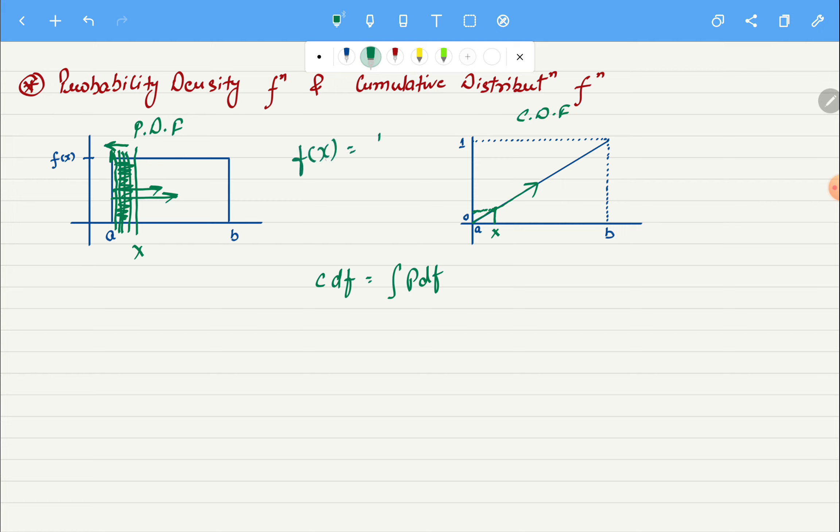So in case of uniformly distributed variable we have f of x as 1 by b minus a. Now if I want to get our CDF from it, so this is nothing but PDF. So now I want CDF, so what I will do is I will do from a to x.